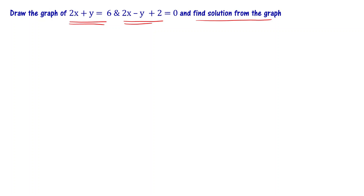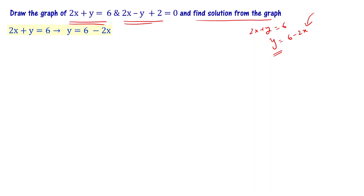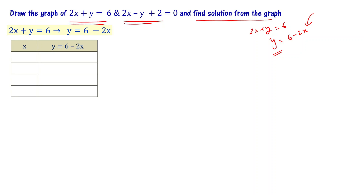For the first equation, 2x plus y equal to 6, let me rearrange this equation: y equal to 6 minus 2x. For different values of x, we find the value of y. Let's start with x equal to 0: y equals 6 minus 2 times 0, that is 6 minus 0, which is 6.